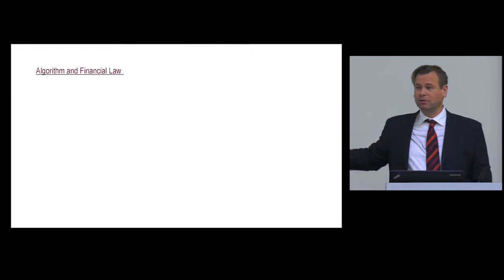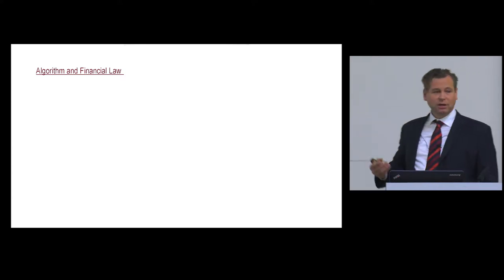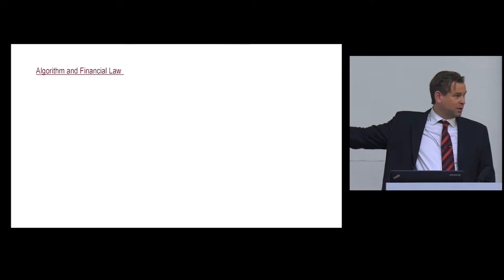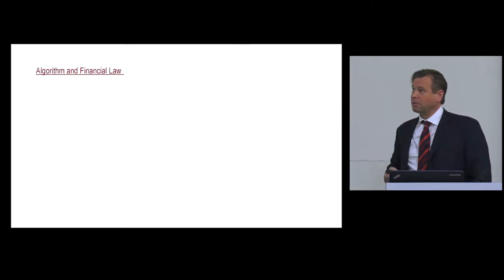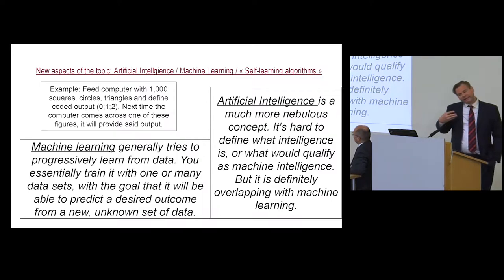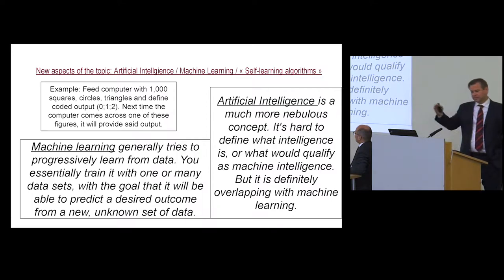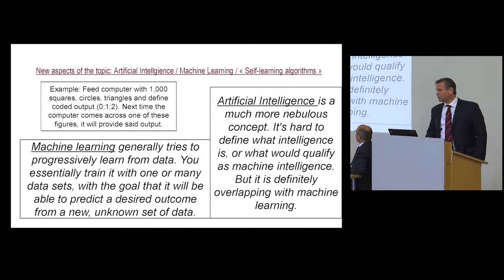I'm not sure whether any of you has ever held a share in your hand — most people only hold bank deposit certificates certifying that they are shareholders. The share of today is a pure data entry; there is nothing like shares anymore in the traditional sense. When we think about algorithms in financial law, we need to consider why we speak about them today — and that is the impact of artificial intelligence and machine learning. When we combine algorithm and AI, we come to the term self-learning algorithm, and that is basically the reason for concern as a lawyer.